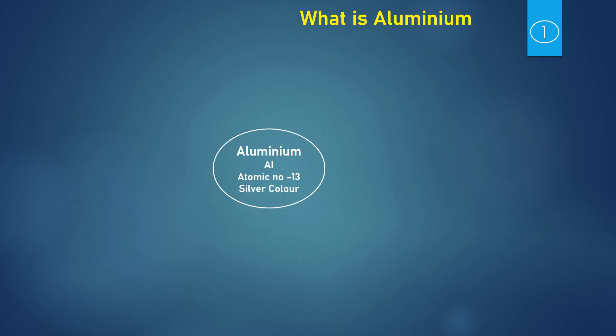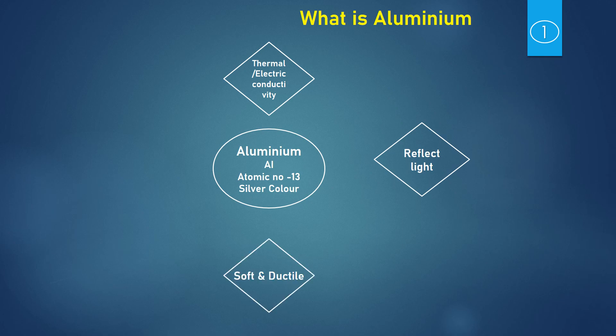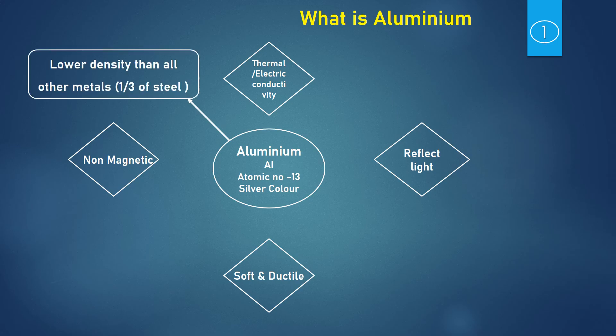What is Aluminium? Aluminium is a metal found in natural form and its atomic number is 13 and it looks silver in color. Its qualities are thermal and electrical conductivity is good, it reflects light, it's soft and ductile, and it has non-magnetic properties. One of its greatest qualities is low density — its weight is one third of steel weight, which is one of the major reasons it is used in the transportation field.